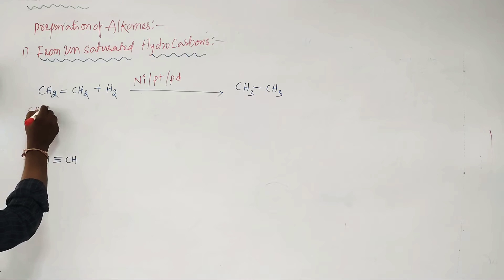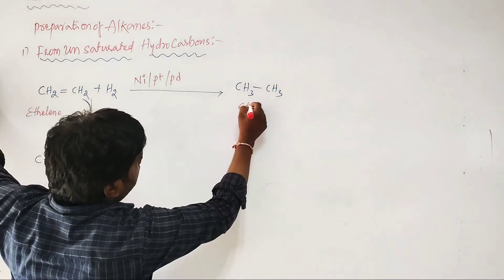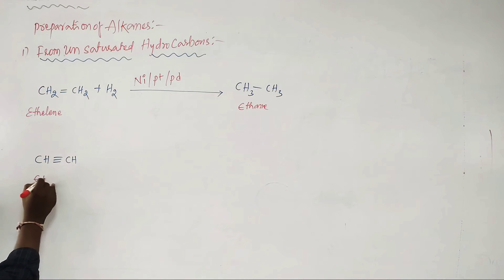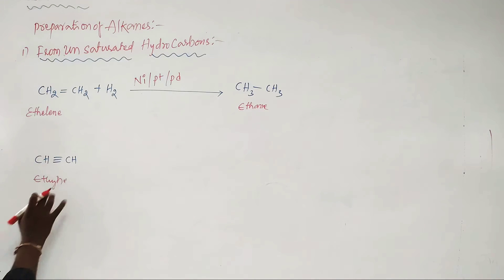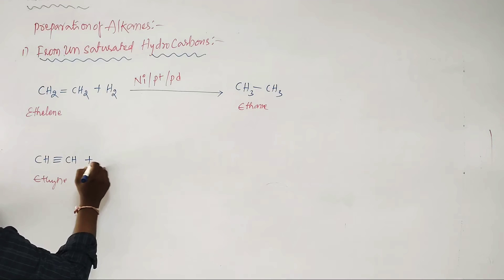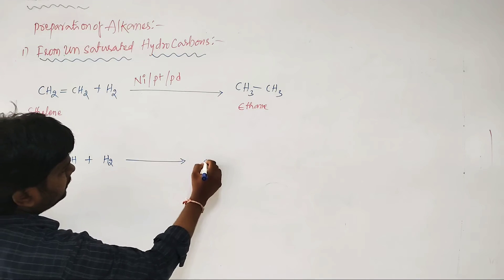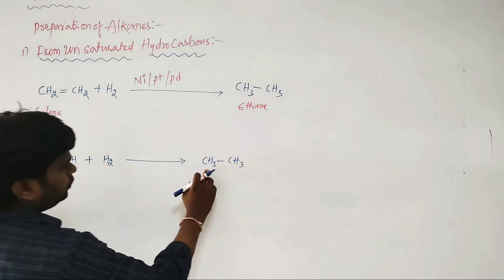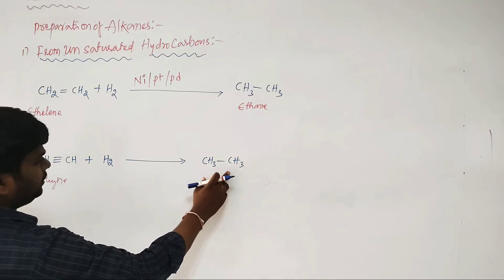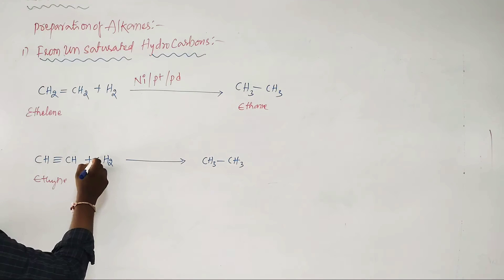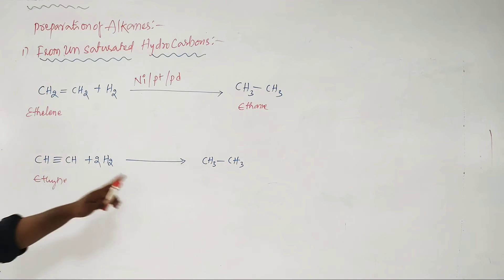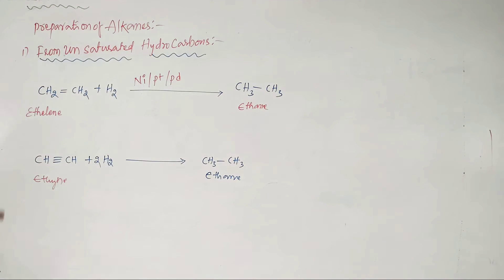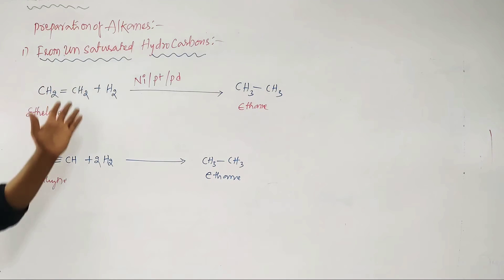For example, ethylene (CH2=CH2) undergoes addition of hydrogen to give CH3–CH3 (ethane). Acetylene (CH≡CH) has 2 carbons and 2 hydrogens, while ethane has 6 hydrogens — so 4 extra hydrogens are added. We take 2 H2 molecules, adding 4 hydrogens in total to acetylene to get ethane as the product.